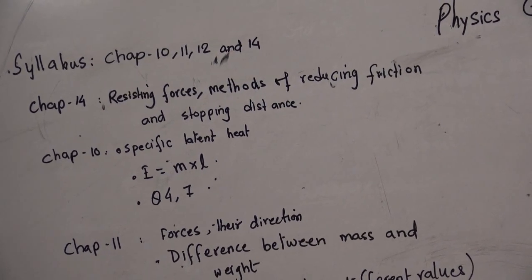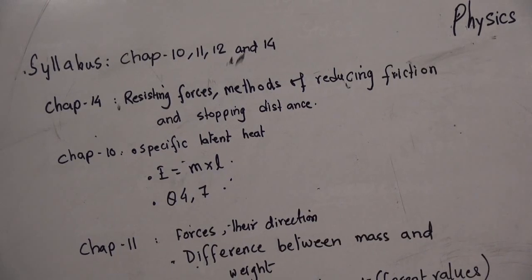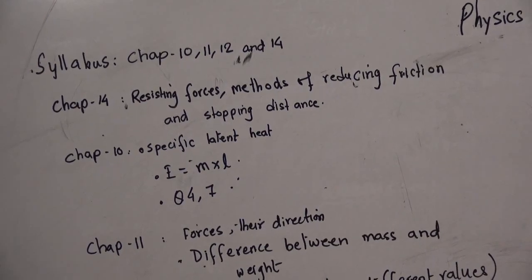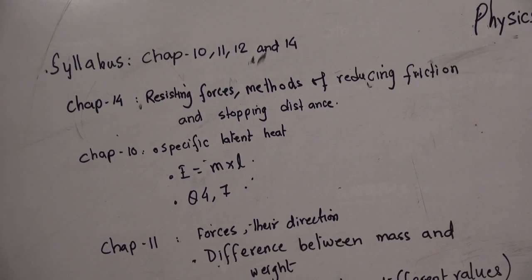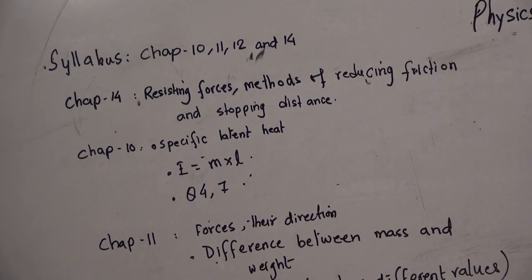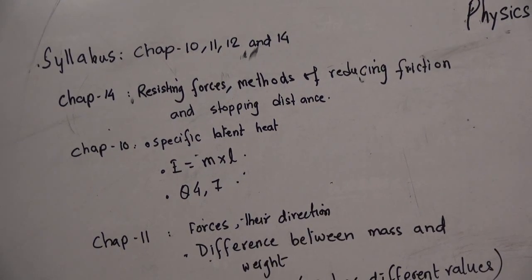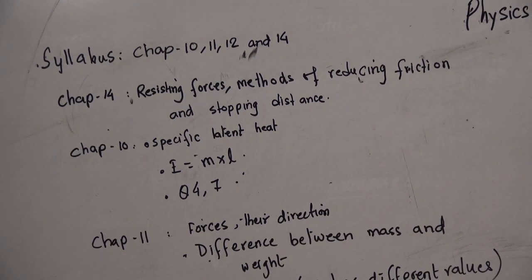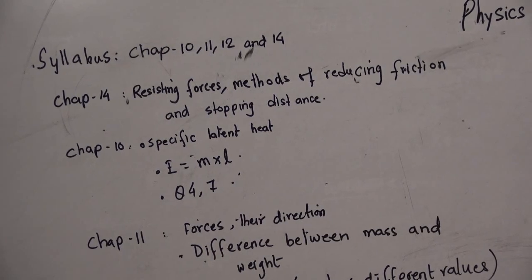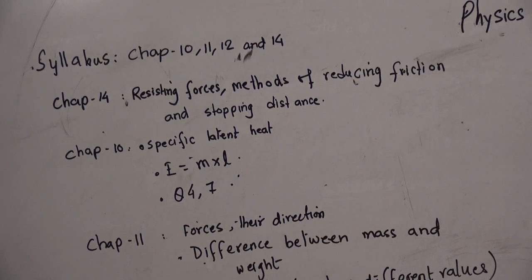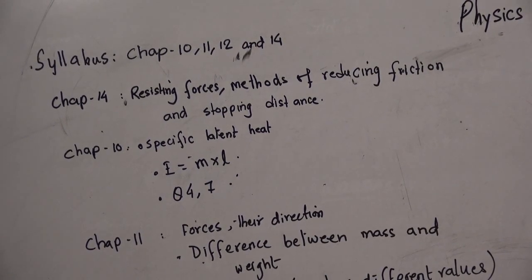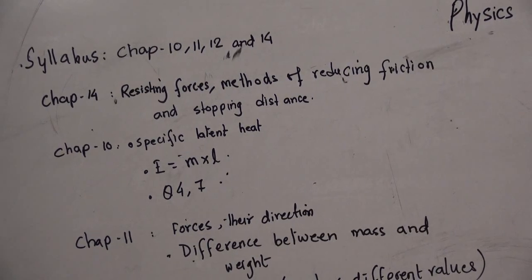From chapter 10, you have specific latent heat. You have learned about specific latent heat for both fusion and vaporization. So you have to learn both the definitions. Then you have to use the formula E equals to ml to find the energy for melting and boiling. If you practice questions 4 and 7, it will help you to a great deal from your textbook.